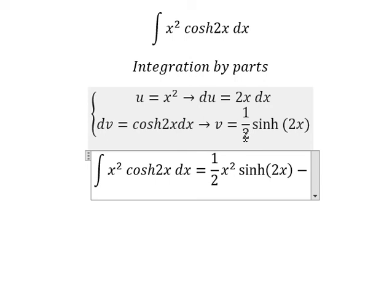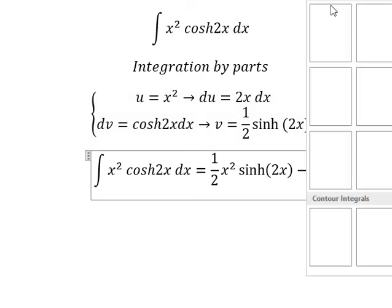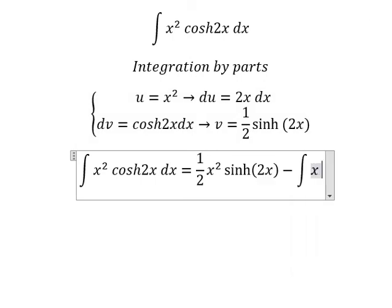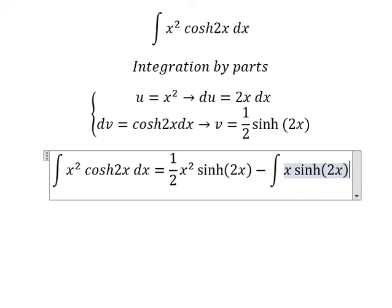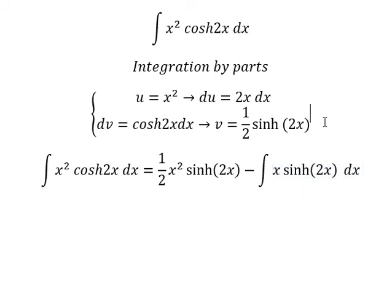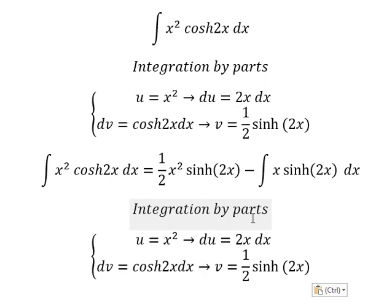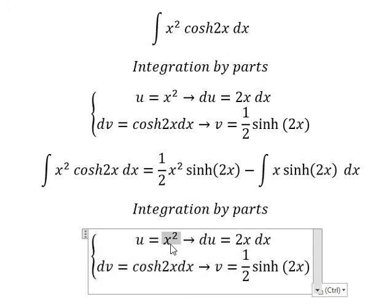We have 1/2 x² sinh(2x) minus the integral of x sinh(2x)dx. So for the next one we use integration by parts again, but this time we change: u equals x, and dv we have sinh(2x)dx.